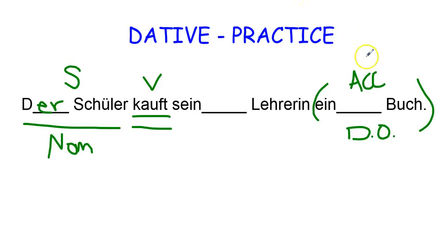Now, note the gender of book. Book is das Buch. It's sächlich or neuter. So it has no ending for the neuter accusative.